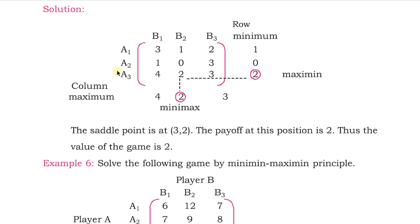The maximin and minimax both coincide at 2. That is the saddle point, located where player A has applied strategy A3 and player B has applied strategy B2 — that is position (3, 2), meaning third row and second column. The payoff at that position is 2, so the value of the game is 2. This means that when A applies A3 and B applies B2, that is the best A can win and the best B can limit losses.